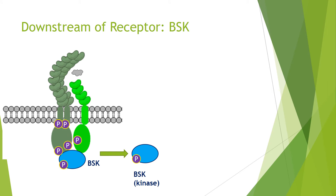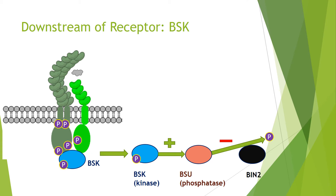Another protein involved in a complex with BRI1 is BSK. When activated, BSK is phosphorylated by BRI1 and dissociated from the complex. BSK is itself a kinase and will phosphorylate and activate a BSU1 phosphatase, shown in pink here. This BSU1 phosphatase will then dephosphorylate BIN2, which is actually a negative regulatory step on BIN2 activity. BIN2 is important in the regulation of transcription factors, as we'll see next.